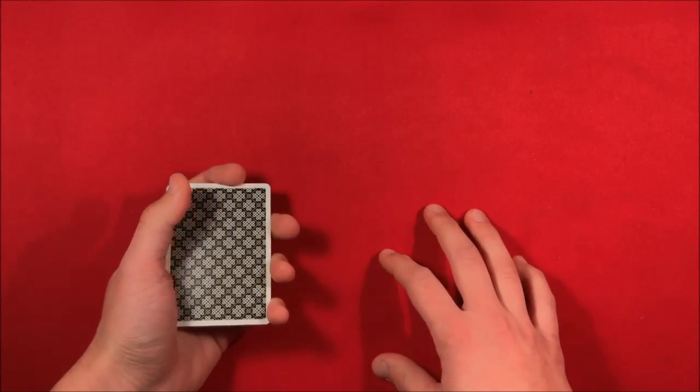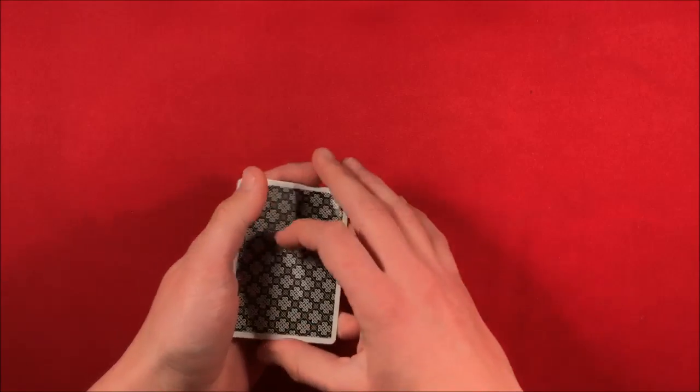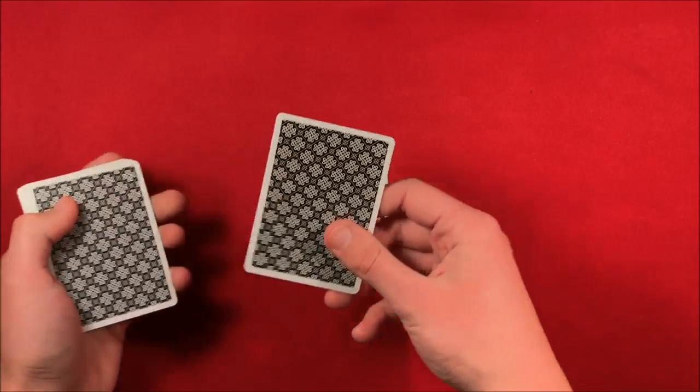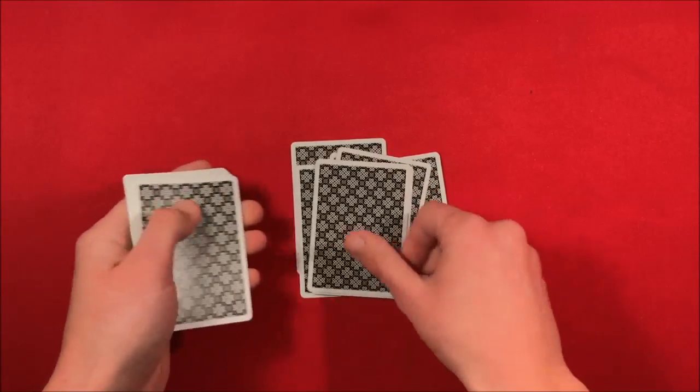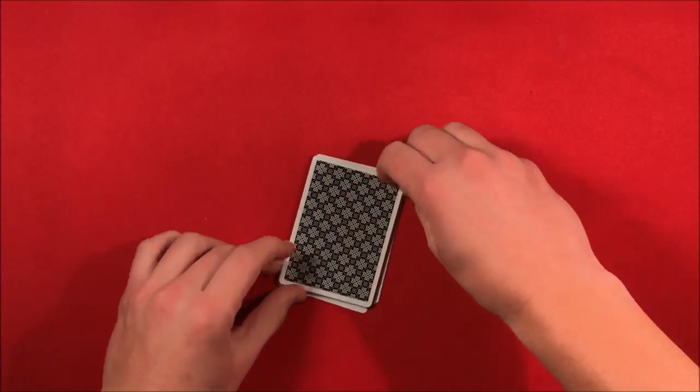What you do is you do this process three times. So they say they wanted the number 9, you count down 1, 2, 3, 4, 5, 6, 7, 8, 9, and then you leave the deck on top, pick it up. You do it two more times: 1, 2, 3, 4, 5, 6, 7, 8, 9, put the deck down.